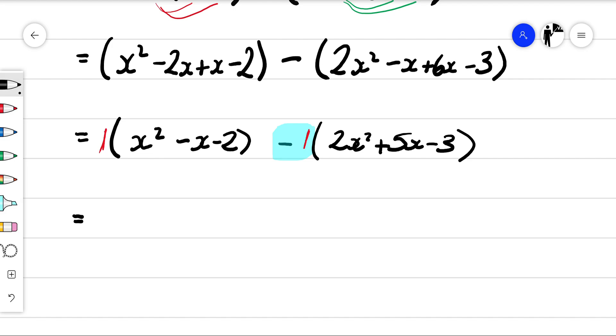So if we were to multiply our first bracket, 1 times x squared is x squared, 1 times minus x is minus x, and then minus 2. Essentially, we've just got 1 lot of the full bracket.